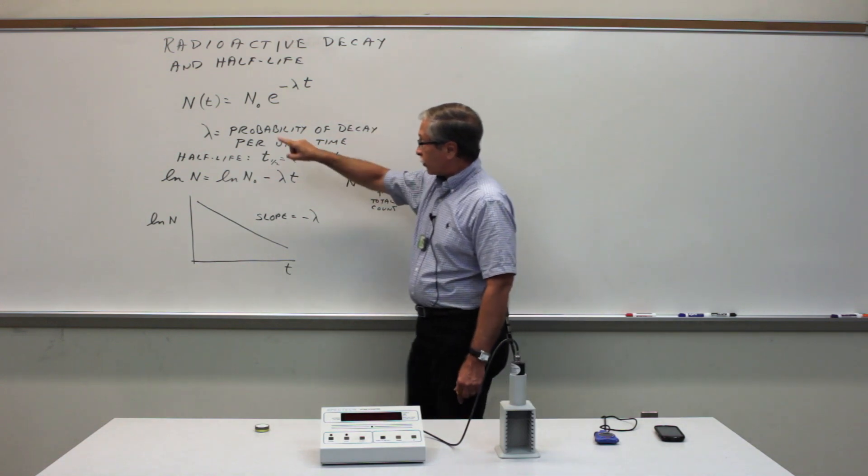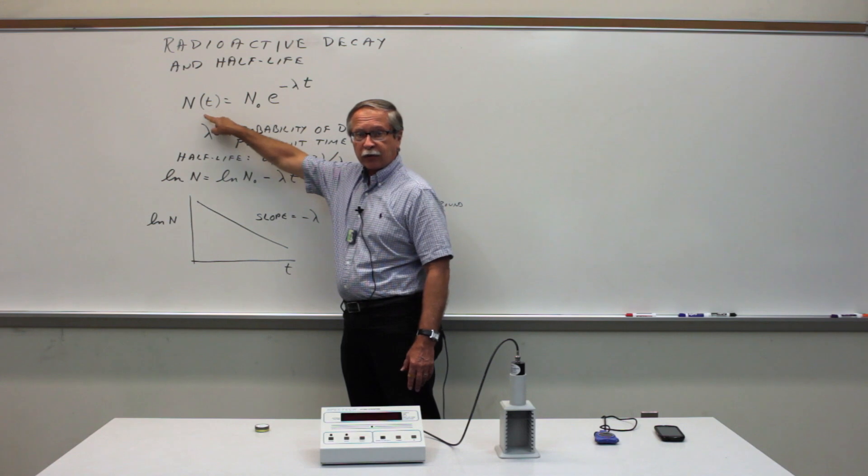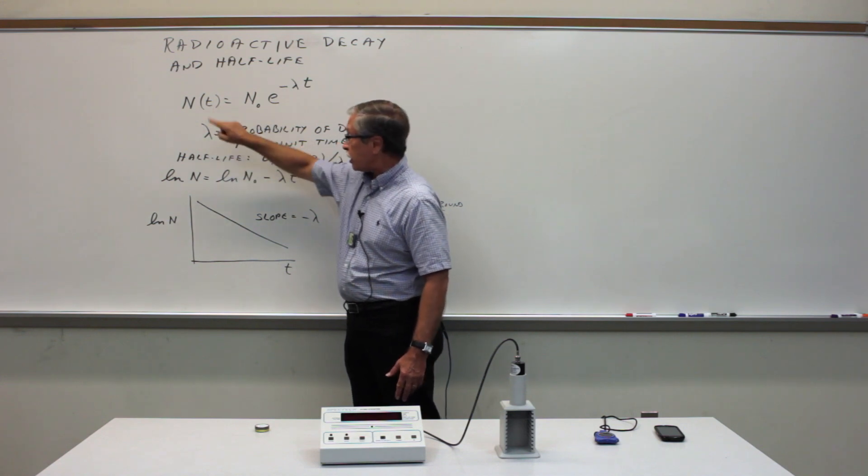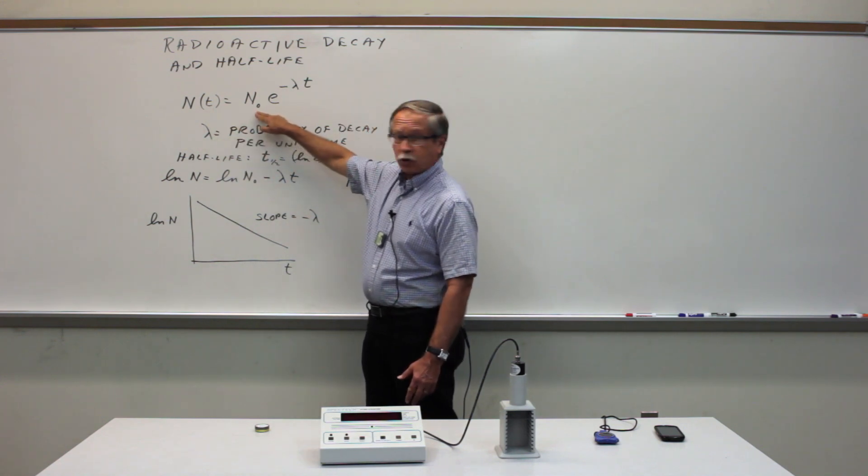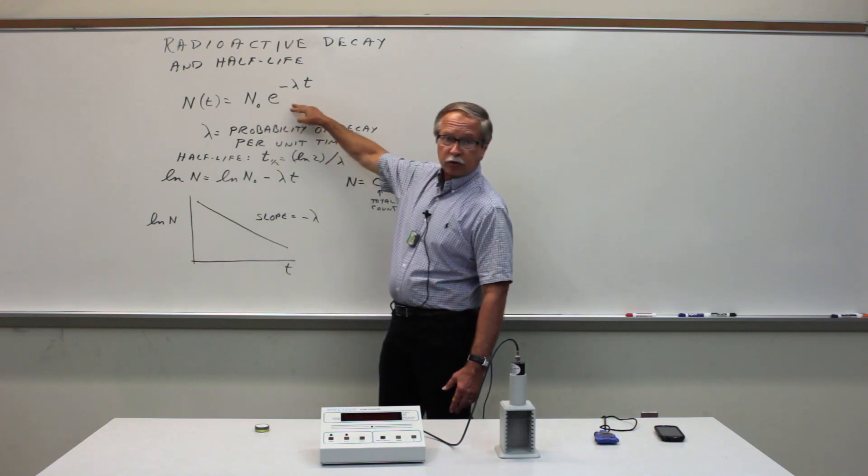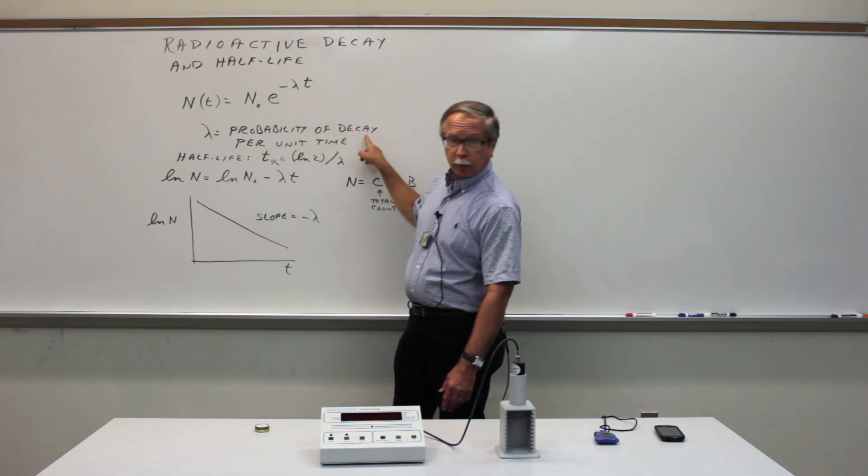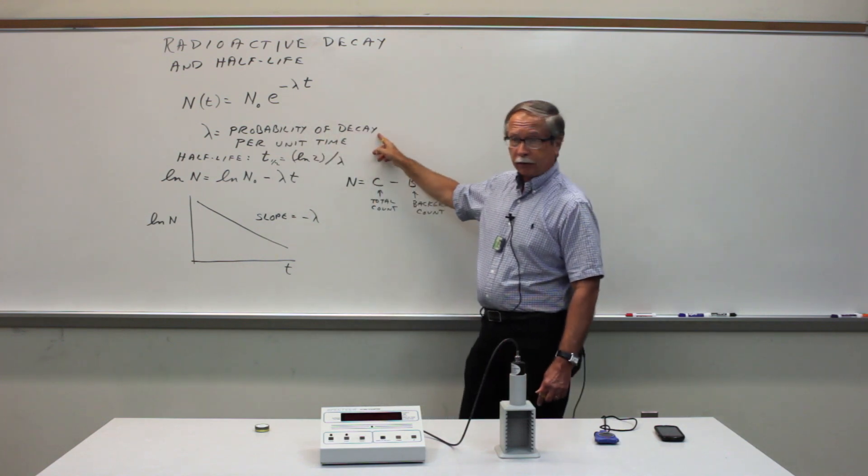What we have is the number of nuclei of a particular kind that survives for some time t is the number that you start with at t equals 0 times a decreasing exponential function e to the minus lambda t. Lambda is the probability per unit time of a decay.